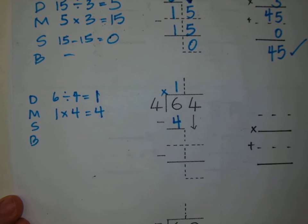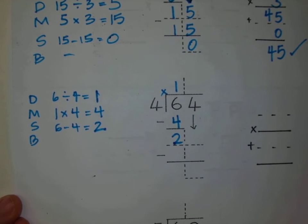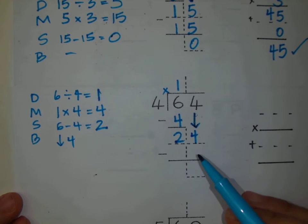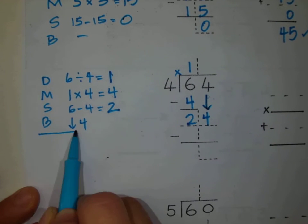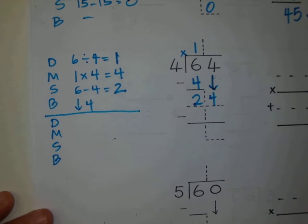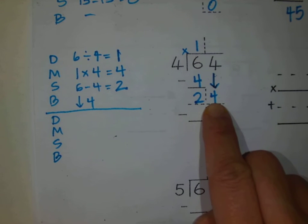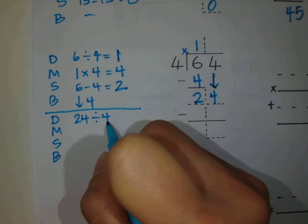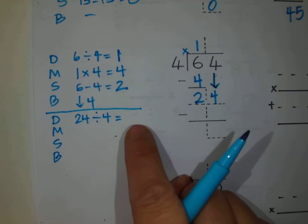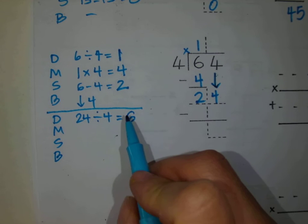I write the 4 here. Then sister subtract: 6 minus 4 equals 2. Then brother brings down the 4 — and you see we will now need to repeat. Now I need to divide again. This can be the tricky part. Now we're dividing 24 divided by 4 — what times 4 is as close to 24 without going over? How many groups of 4 can I make out of 24? I know that it is 6 because 6 times 4 equals 24.